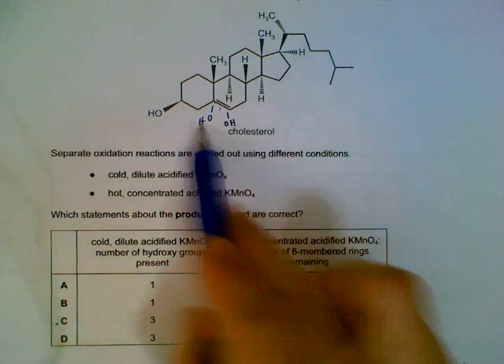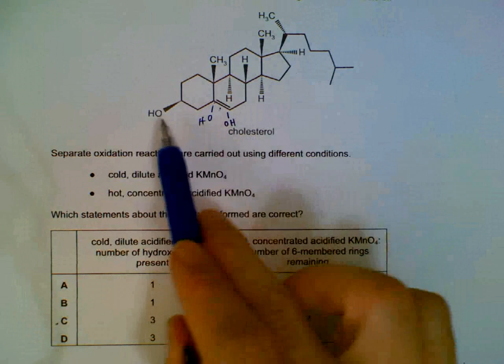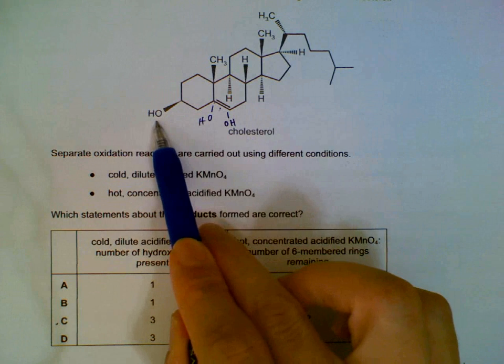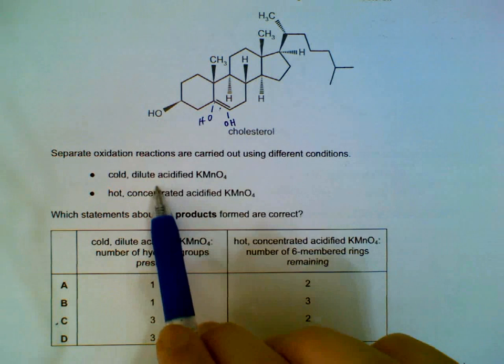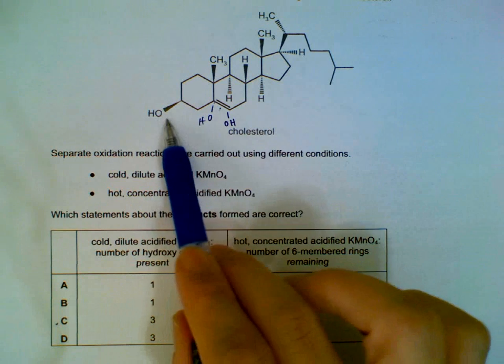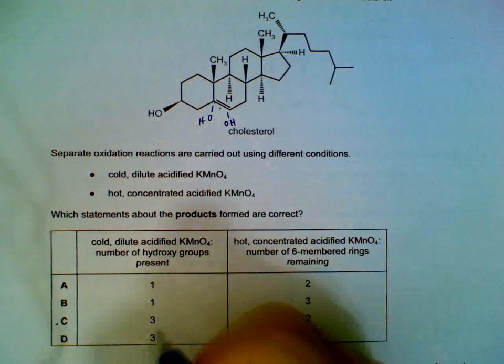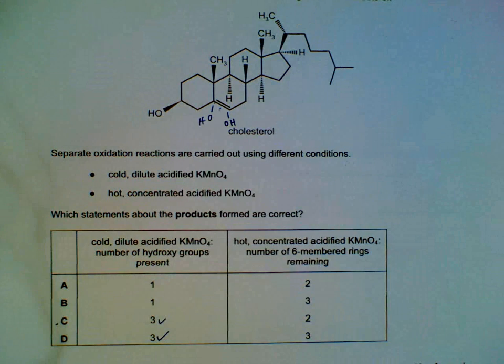So we will have one, two, three OH. This will not be oxidized because the cold conditions will not oxidize the hydroxyl to a ketone. So we have three hydroxyl groups remaining.